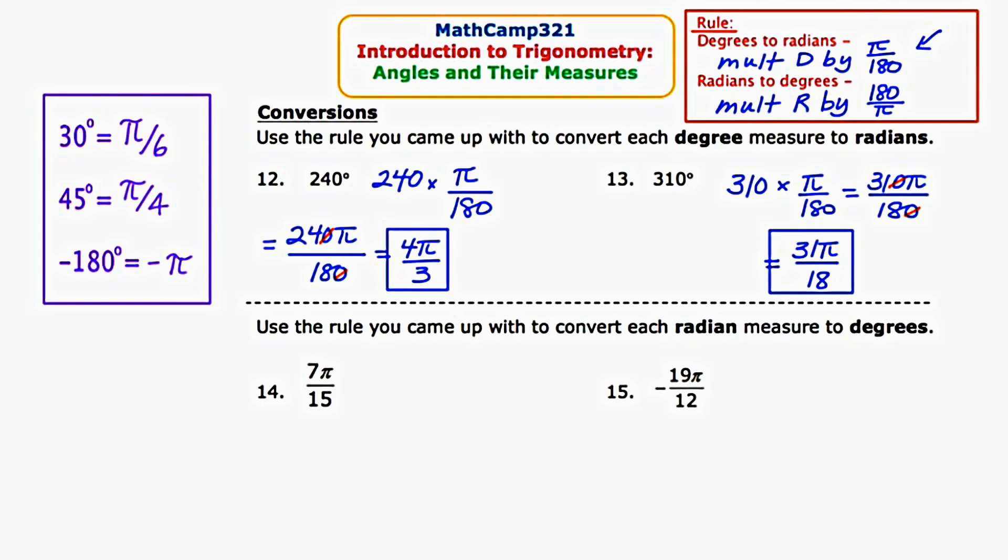Now let's go in the reverse direction. For questions 14 and 15, we're given angles in radian measure and we want to go backwards to degrees. So now we're going to use the bottom rule and multiply by 180/π. For number 14, I'm going to start with 7π/15 and multiply that by 180/π. The π's are going to cancel out. The 15 and the 180 cross cancel, leaving you with a 12, and the 12 and the 7 multiply together to get 84 degrees.